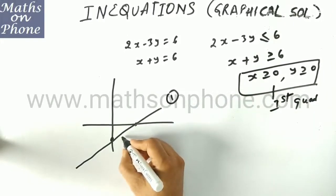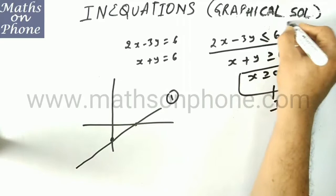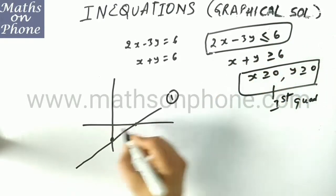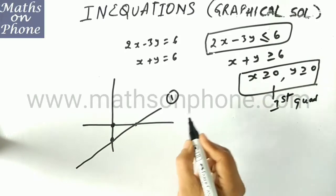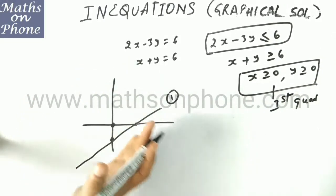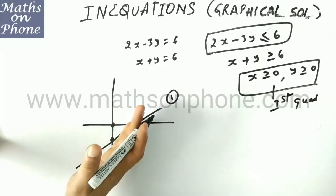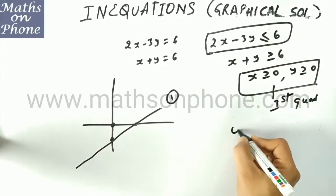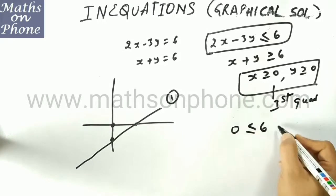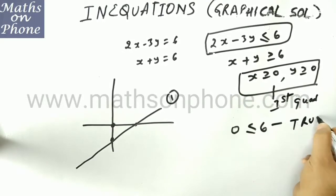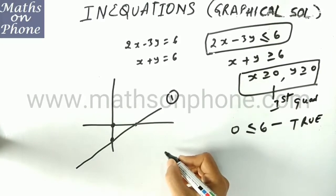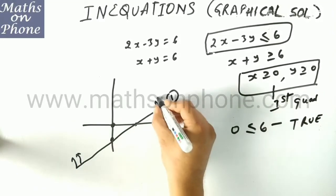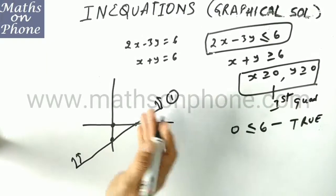Do you want to shade the region for line 1? Go for that. Look at this inequation. If we put x equal to 0 and y equal to 0 — I said always compare with respect to the origin: true means origin side, false means opposite to the origin side. I put (0, 0): 0 is less than or equal to 6 — is it true or false? It is true. True means we shade the area containing the origin, which is the upward area. Just put an arrow to identify that area.